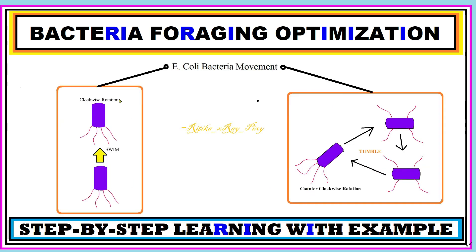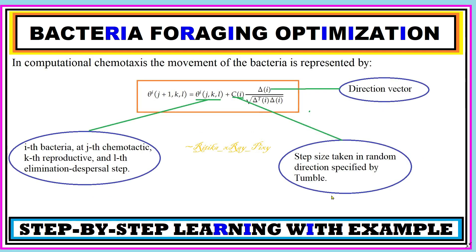Swimming is in the clockwise direction and tumble movement is counterclockwise rotation. In this algorithm, we use a mathematical equation for the movement of the bacteria. We can compute the movement of bacteria using this equation: this is the ith bacteria at the gth chemotactic, kth reproduction, at the lth elimination-dispersal step. This represents the direction factor, and the step size is taken by the bacteria in the random direction as specified by the tumble. For randomness, normally distributed random values within the domain [-1, 1] are used.